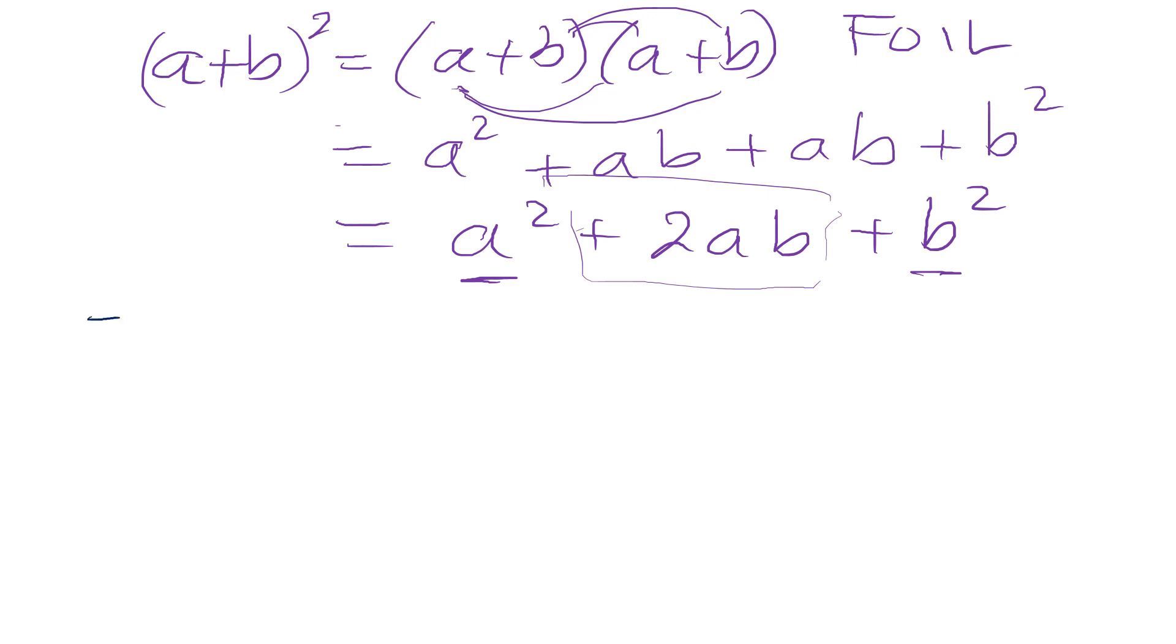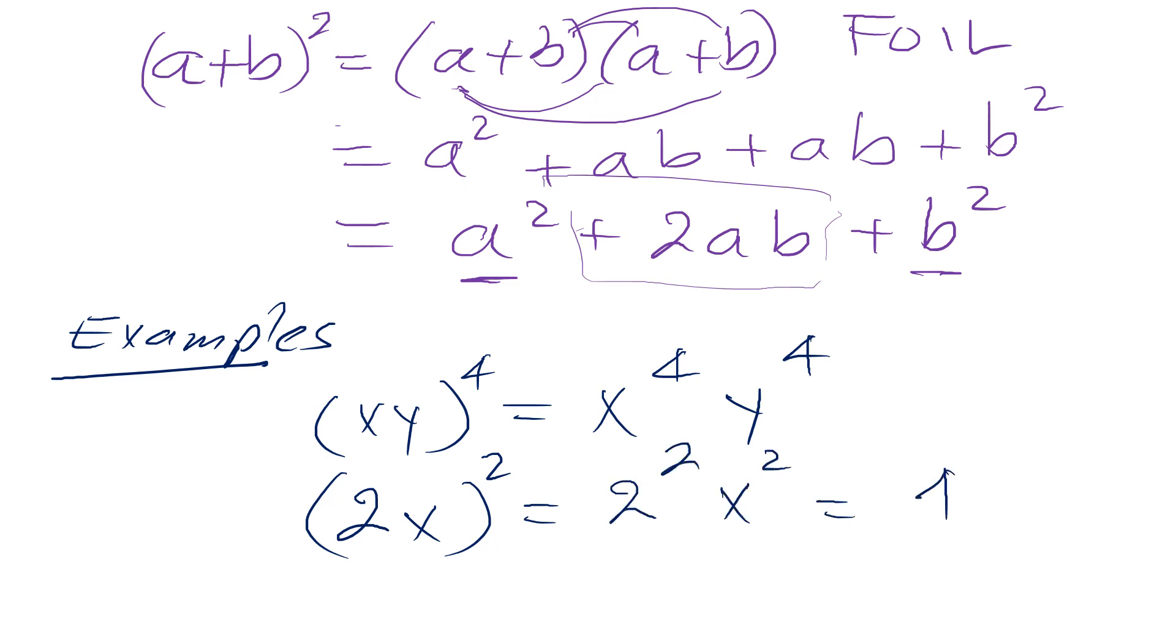All right, let's do some examples. If I have (xy)^4, then we know what we need to do. If I have (2x)^2, then we know it's 2^2 and x^2, so 4x^2.